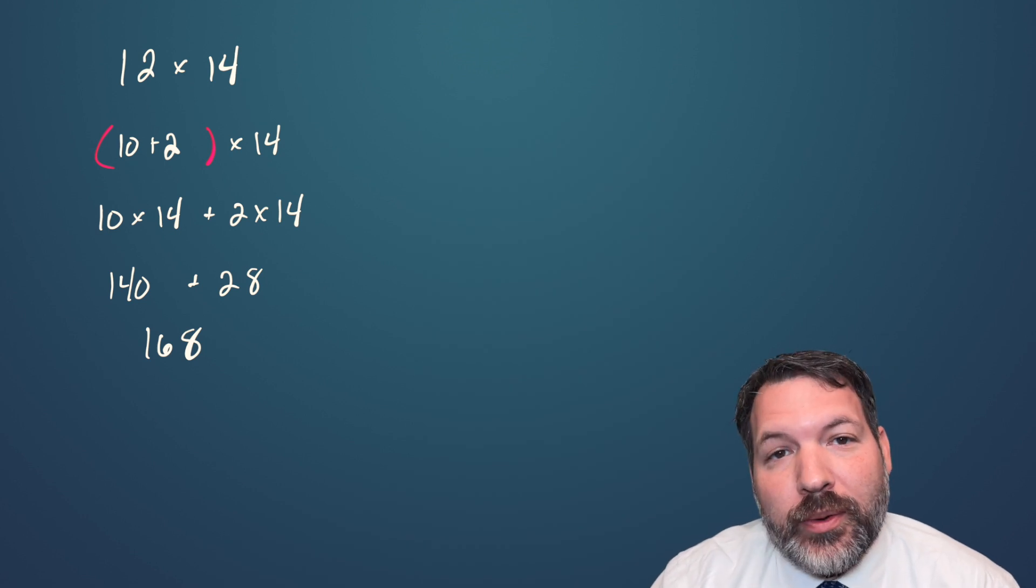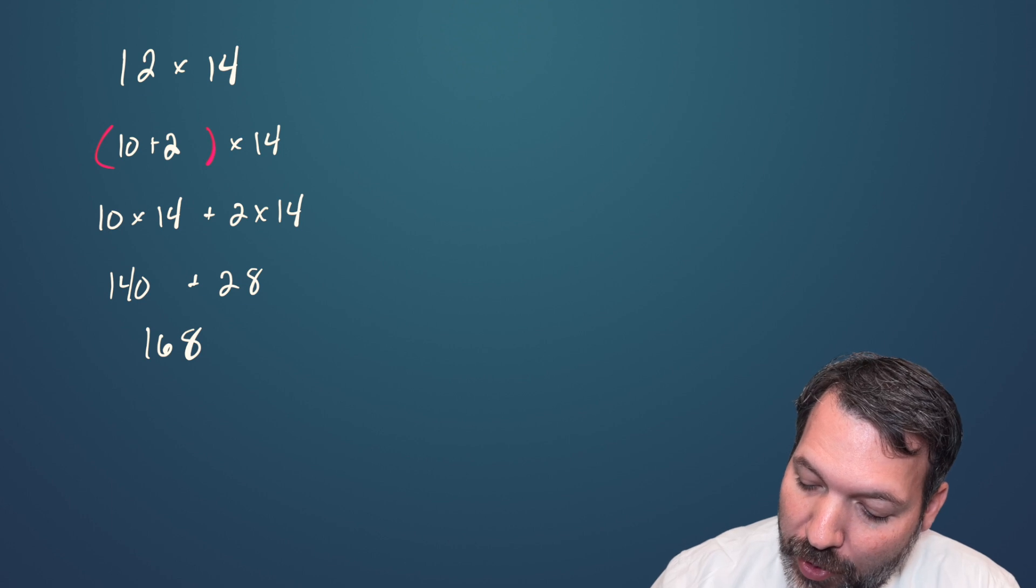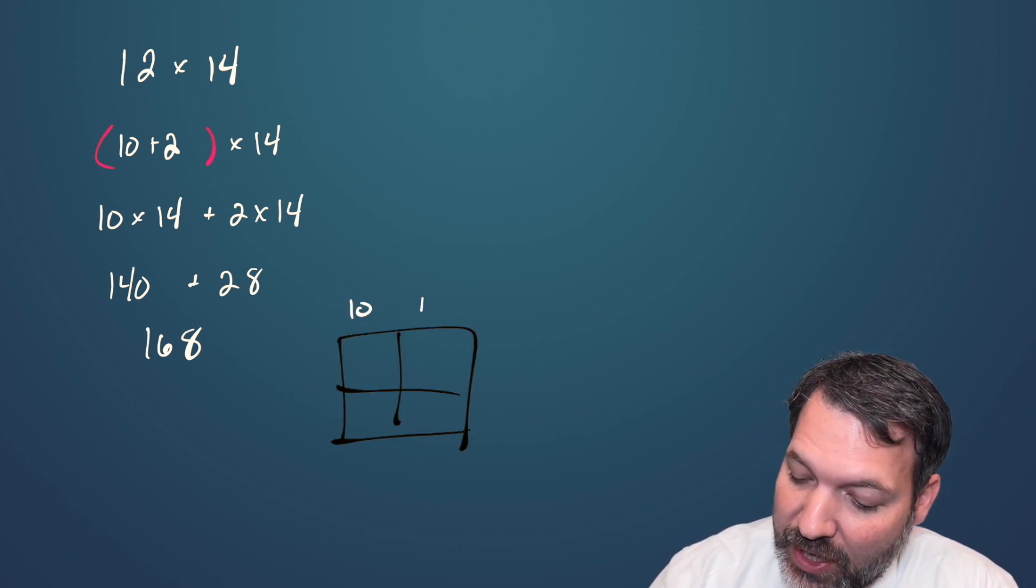Although it's certainly true that we teach distribution in America—I presume they teach it everywhere—when students are younger, they often learn about distribution through something called the area model for multiplication. The area model would represent this product, 12 times 14, as a 10 plus a 2 and a 10 plus a 4.